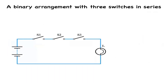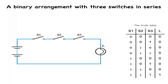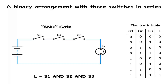Here is yet another binary arrangement, this time with three switches in series, which generates the truth table. The three switches form what is known in logic gate terms as a three-input AND gate. We state it logically in the equation: L equals S1 AND S2 AND S3.